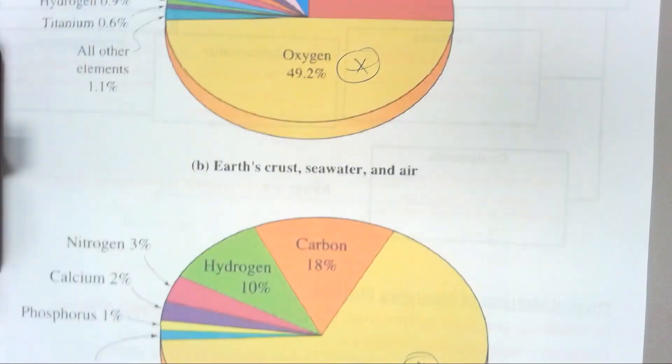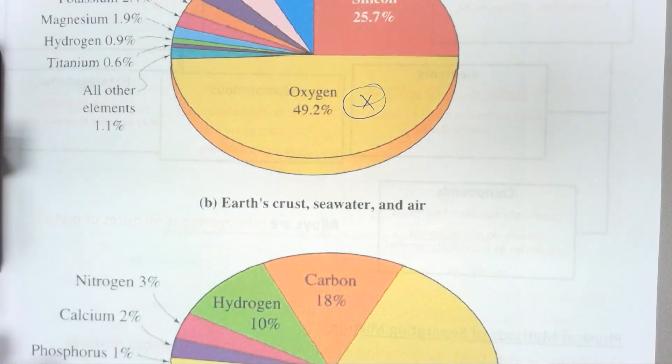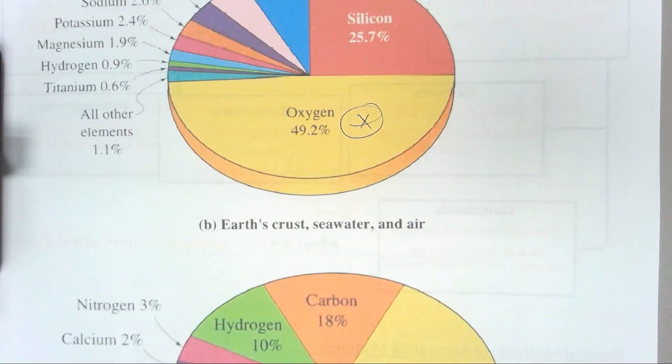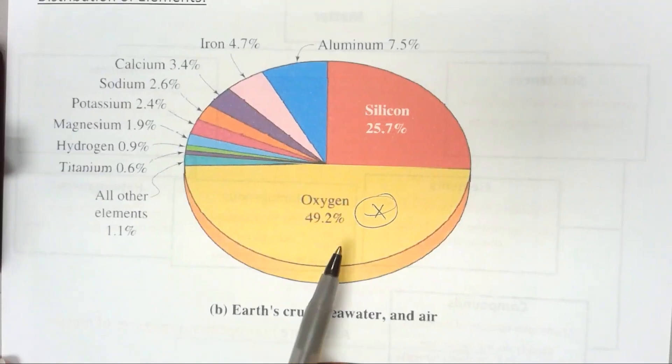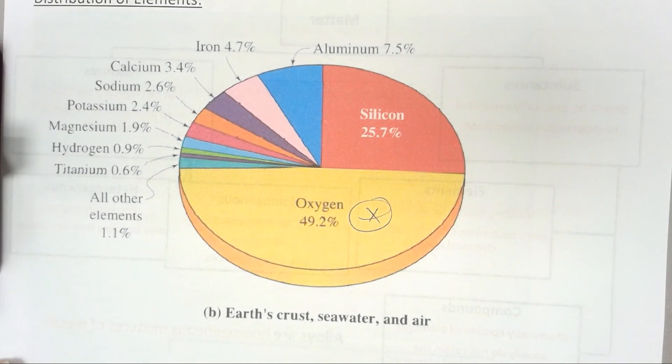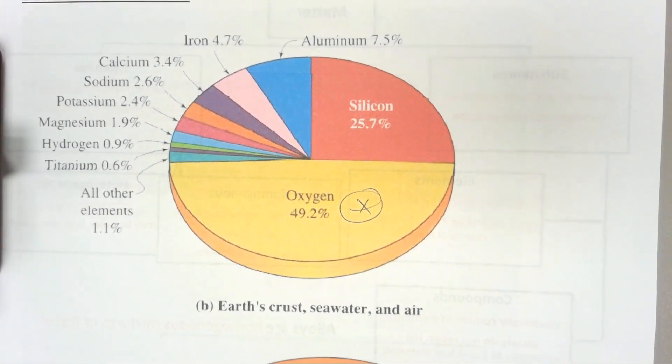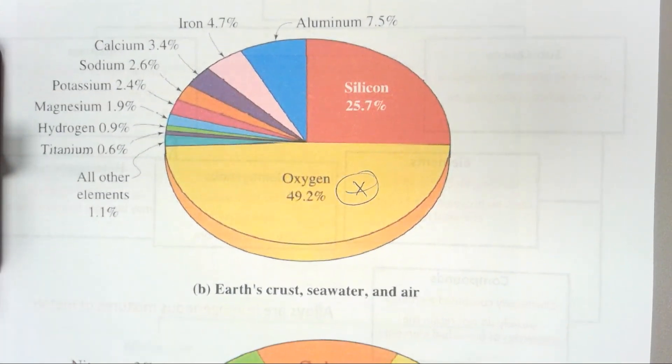Now, let's go back. The Earth, the seawater, and the air also are mainly oxygen. Where is all that oxygen? Is it all in the air? No. Where is it? It's in the water. We are mainly made up of water. That's where all of our oxygen is. And that is where all of this oxygen is. It's tied up in water.